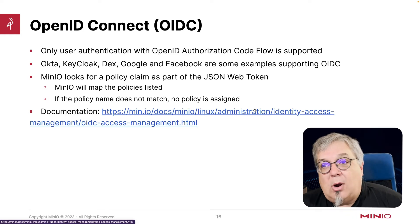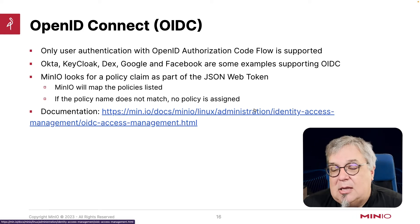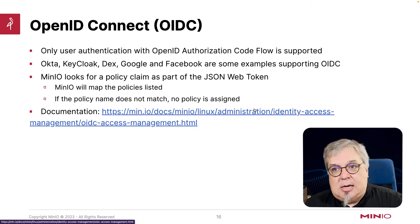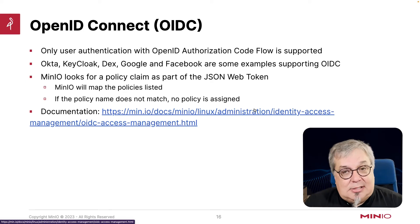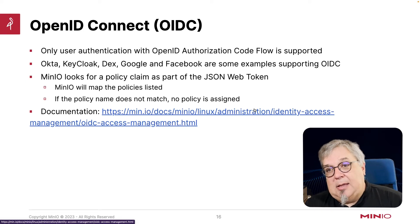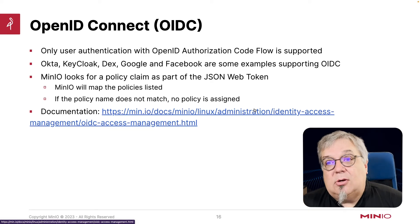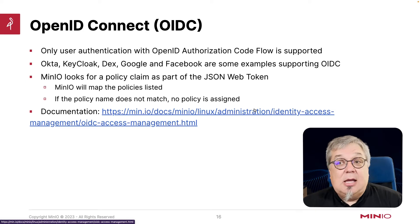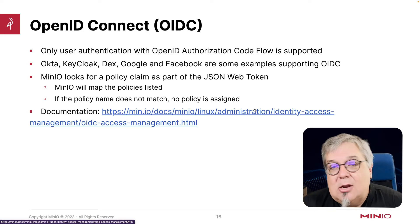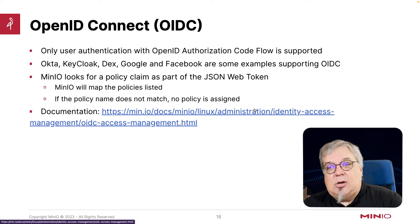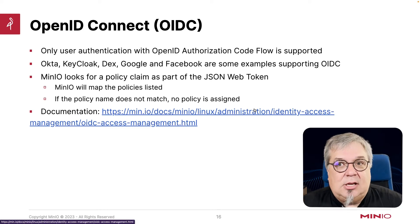MinIO is going to look for a policy claim as part of the JSON web token that gets sent back as part of the OpenID Connect flow. MinIO will then try to map the policies listed to that user. The policy is still under control of MinIO — MinIO is being asked to assign the policy. If the policy name doesn't match, no policy is assigned and you're back to your default deny. If you want more information on this, take a look at our documentation for setting up OpenID Connect.